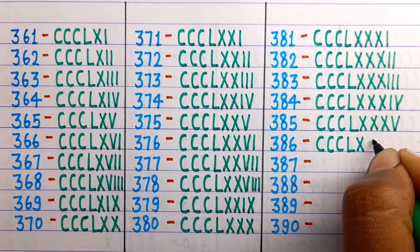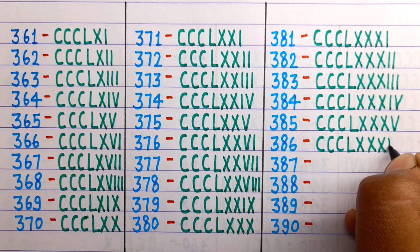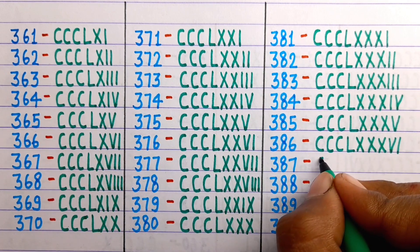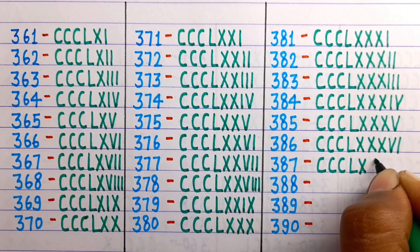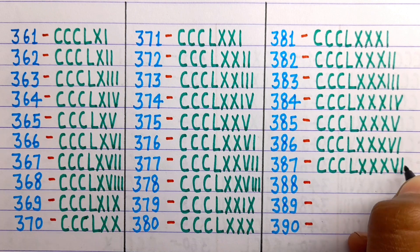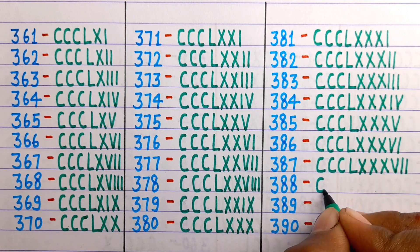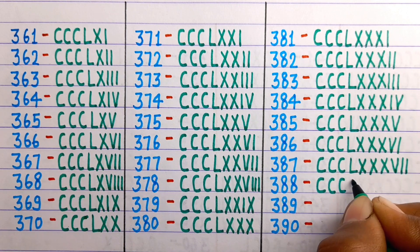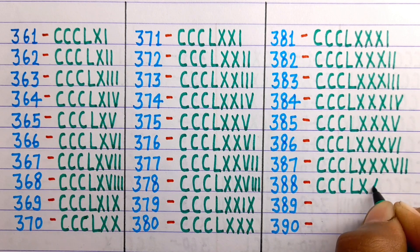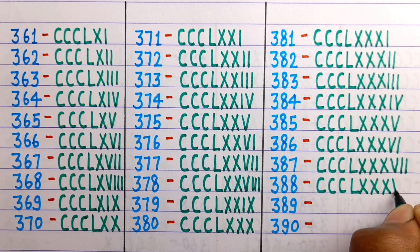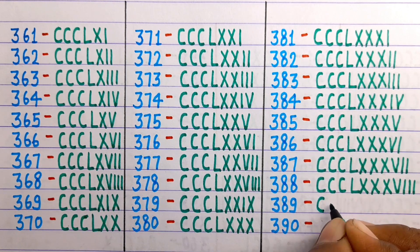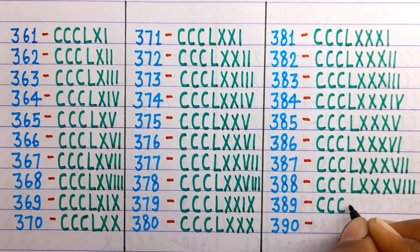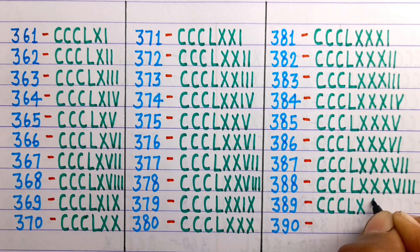386 is CCCLXXXVI. 387 is CCCLXXXVII. 388 is CCCLXXXVIII. 389 is CCCLXXXIX.